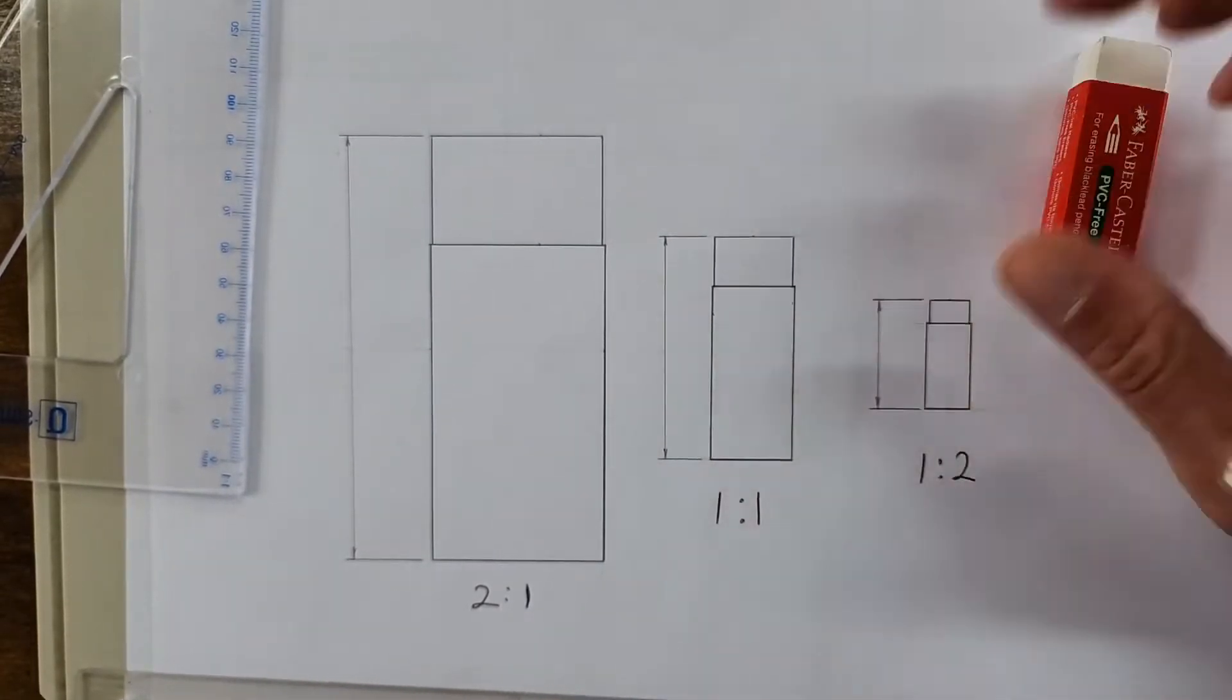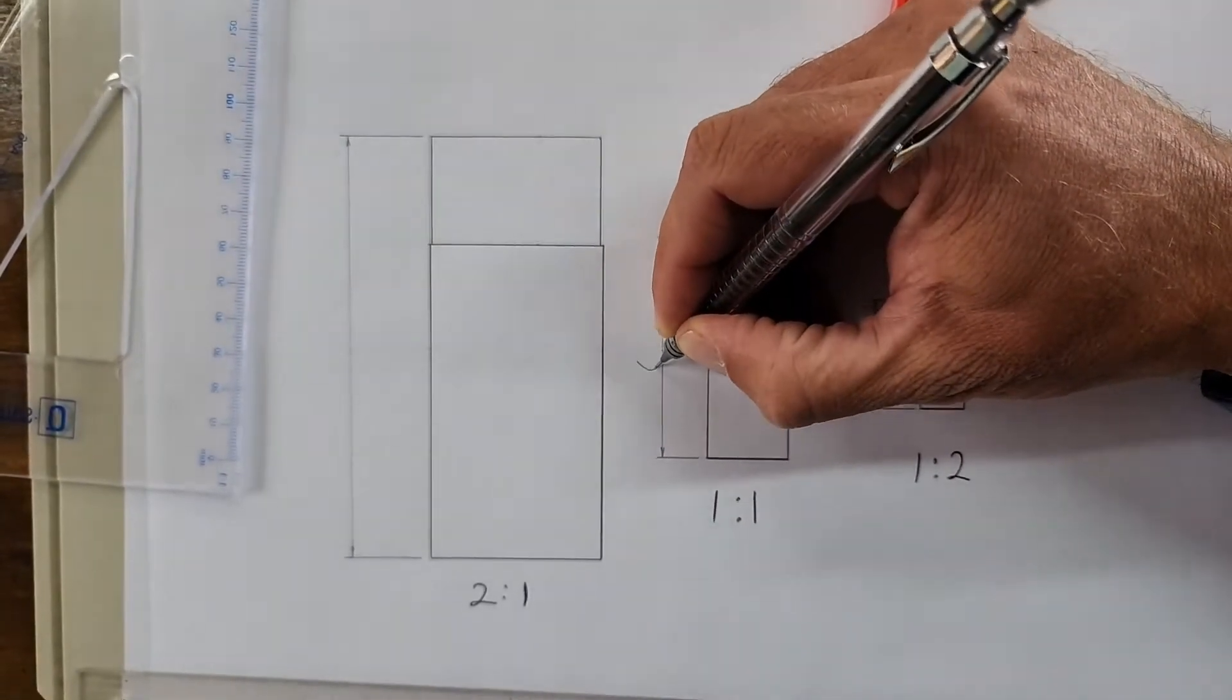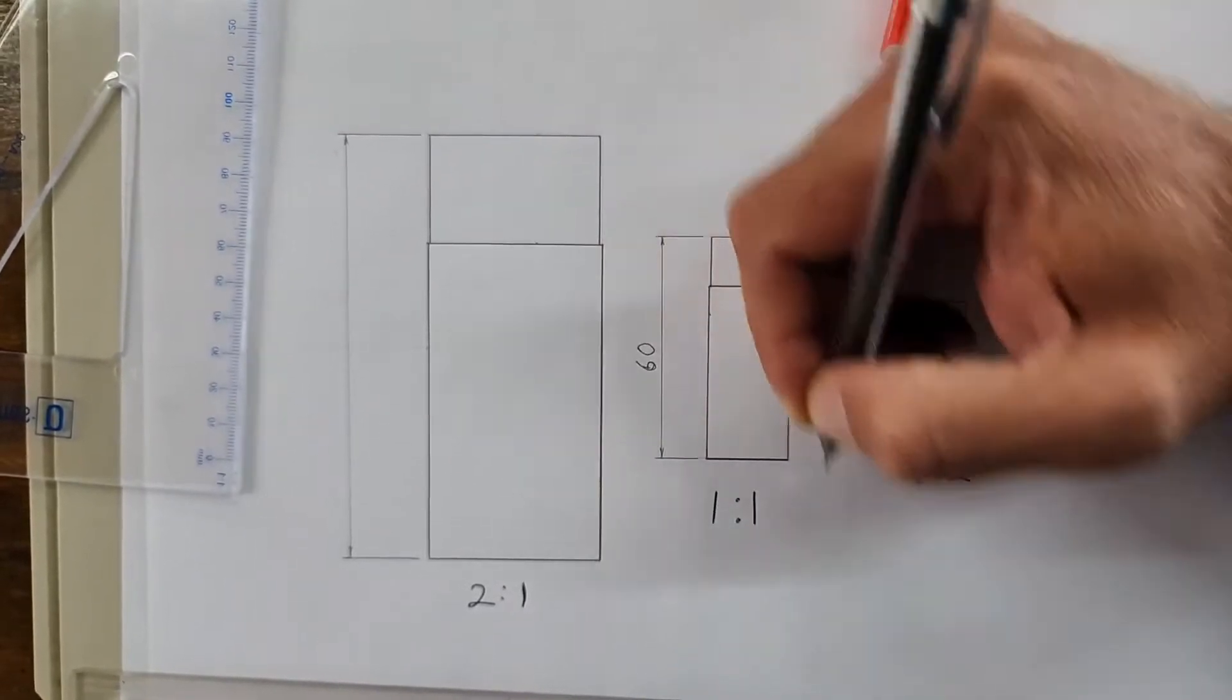Scale 1 to 1, the eraser you can measure it, the size of this is 60. The size here is 60.